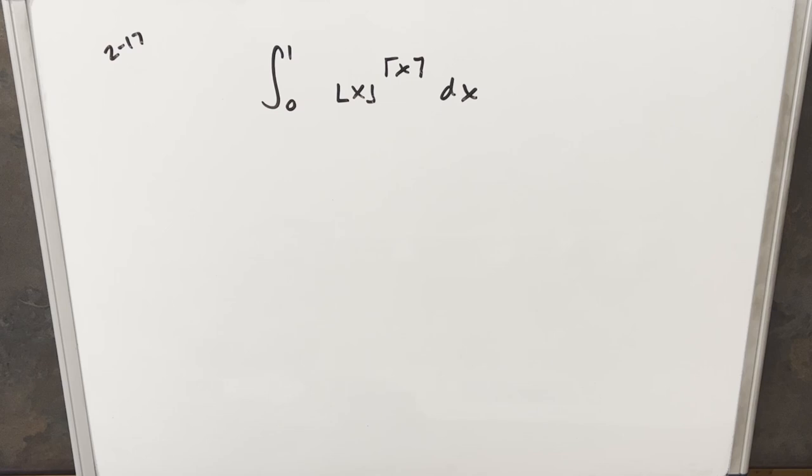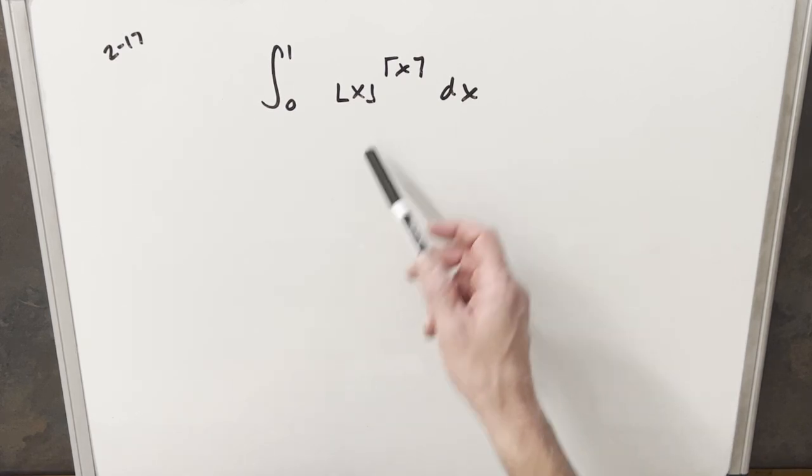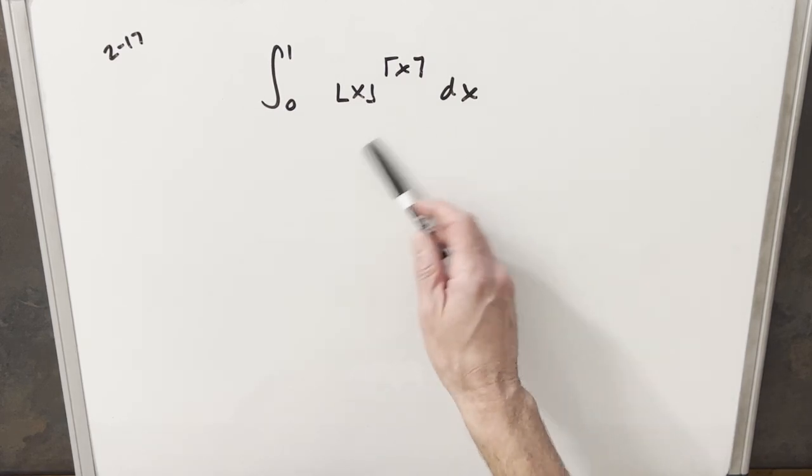This could be a quick integral that we could do in maybe 5 seconds, but it's going to take a little analysis. Because we have the floor and ceiling functions, I'd like to first draw a graph to get a better sense of this.